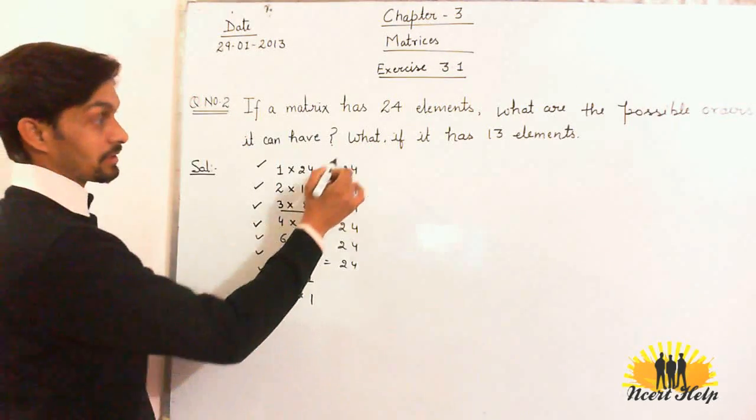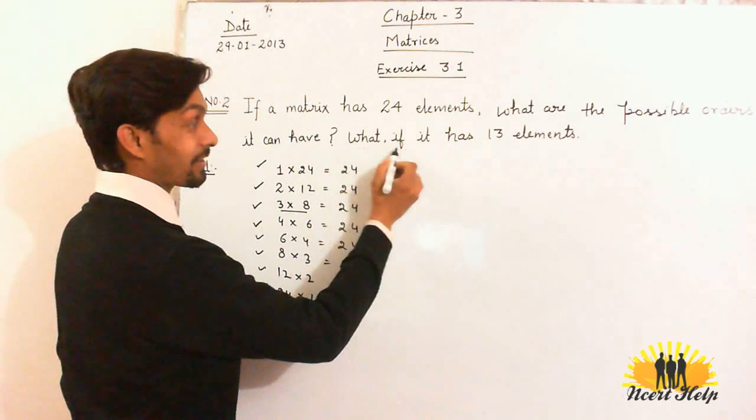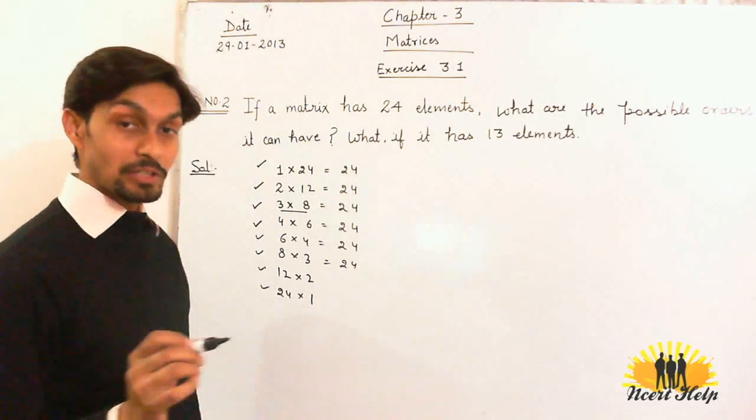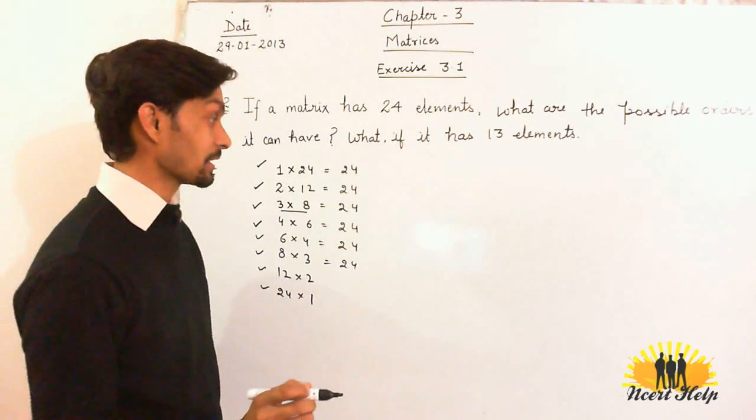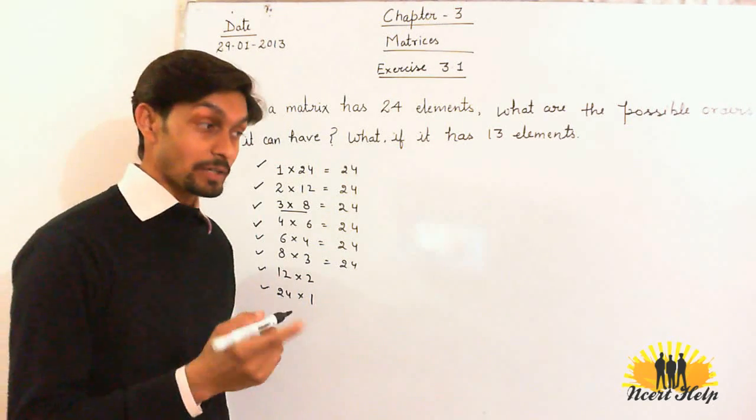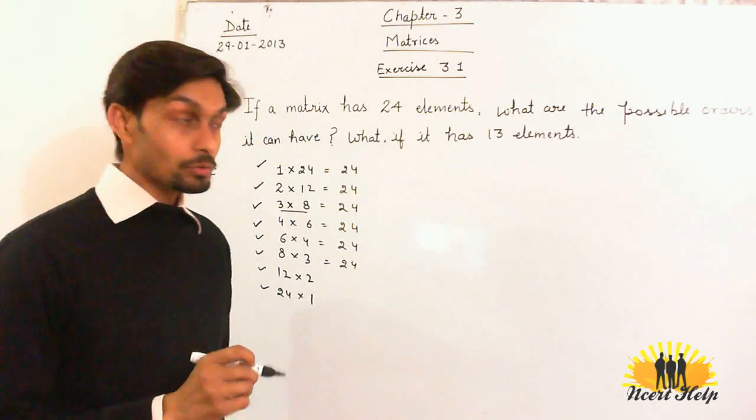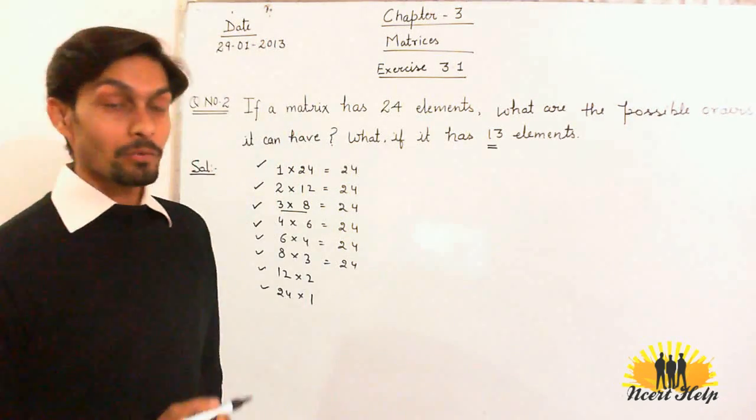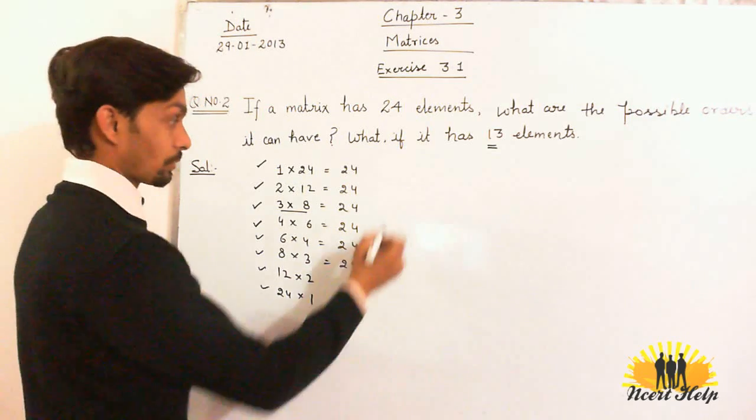Now, the second part of the question is, what if it has 13 elements? If there are 13 elements in the matrix, then what are the possible orders? Just find out the factors of 13. Now, you see that 13 is a prime number. The only factor of a prime number is 1.